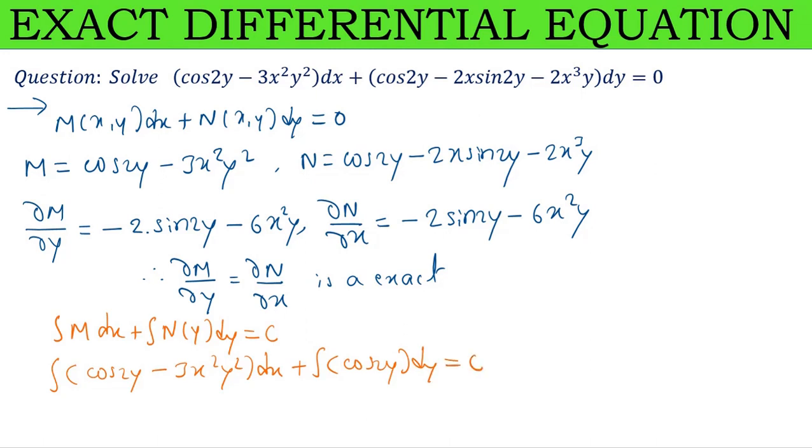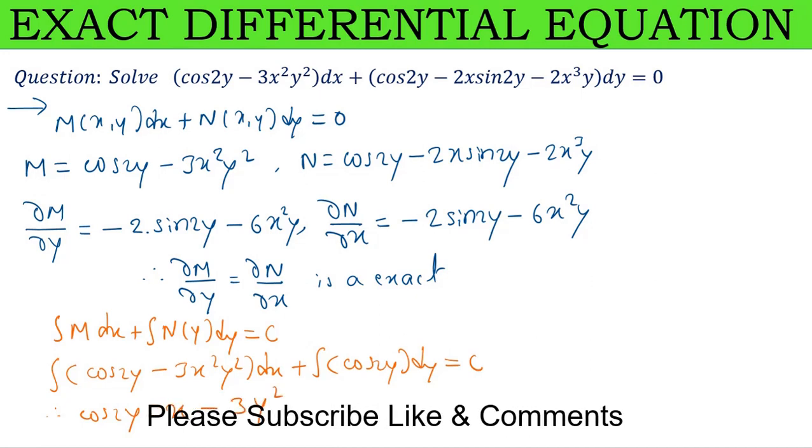First term: cos 2y is constant, so cos 2y times x. Minus: 3 and y² are constants, integrate x² to get x³/3, giving -x³y².